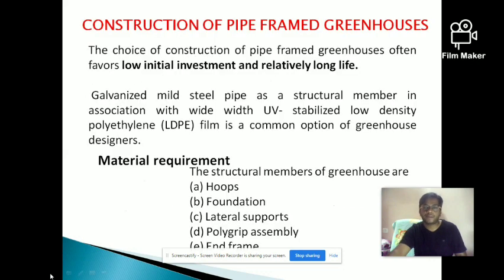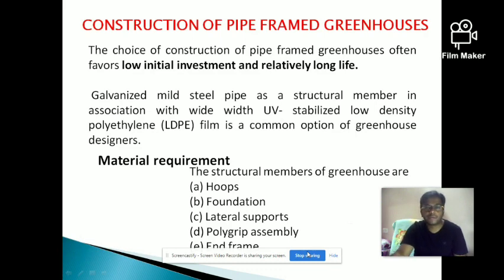Next we have taken a case study of construction of pipe-framed greenhouses. In this type we use pipes for the construction and UV-stabilized low-density polyethylene films as a covering material. These are low in initial investment and their life is also a little longer. The materials required are hoops, foundations, lateral supports, polygrip assembly, and end frames.